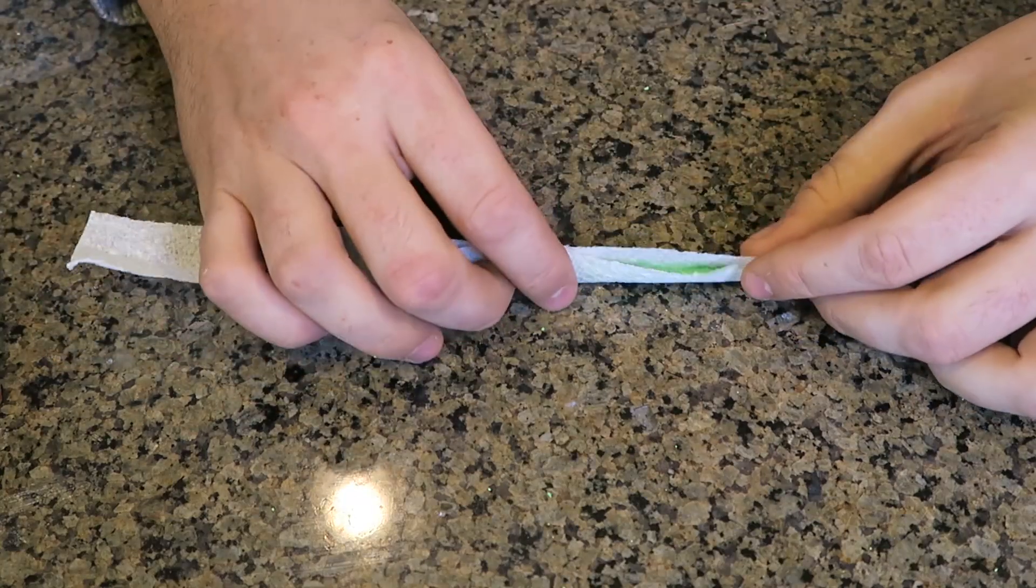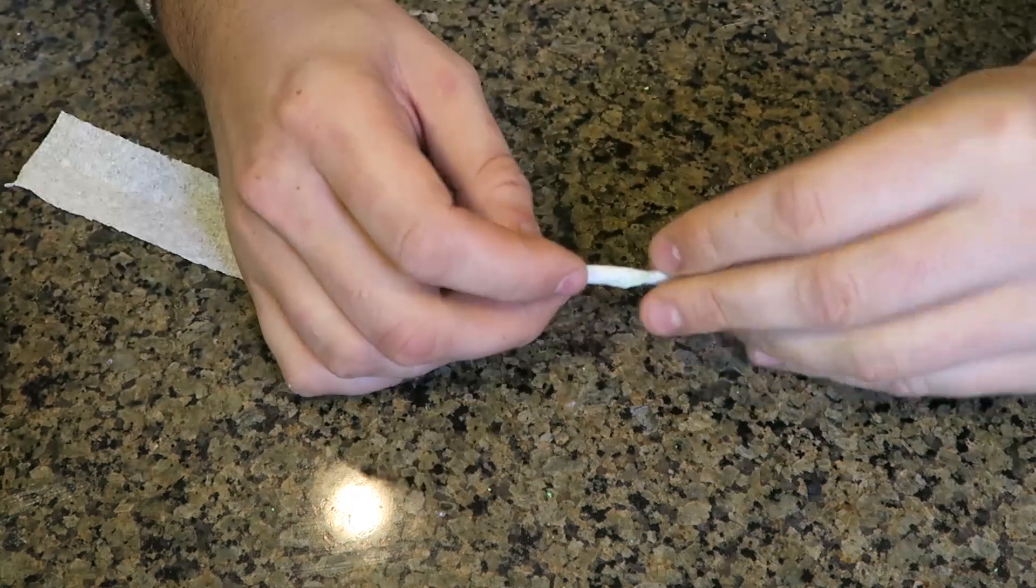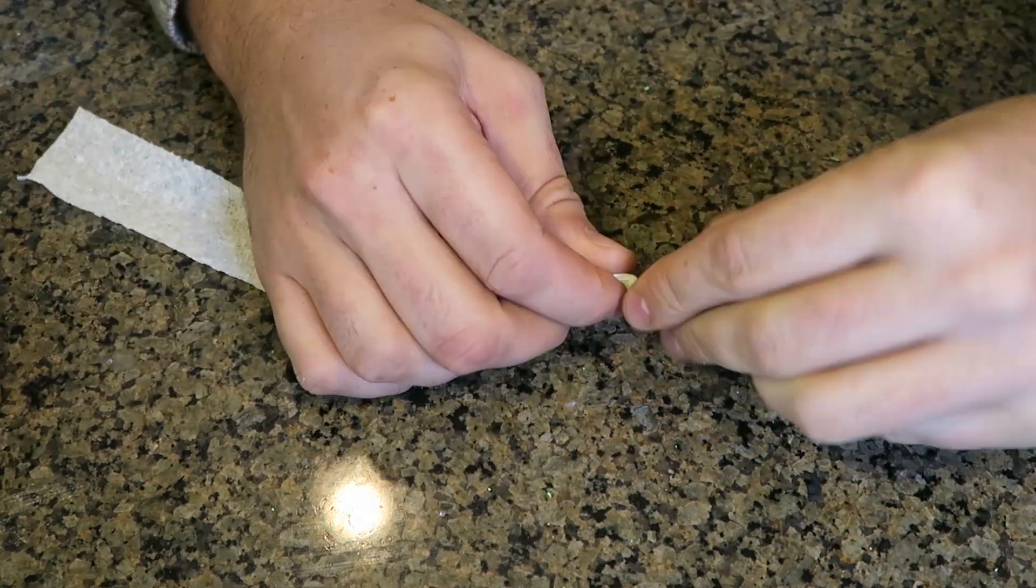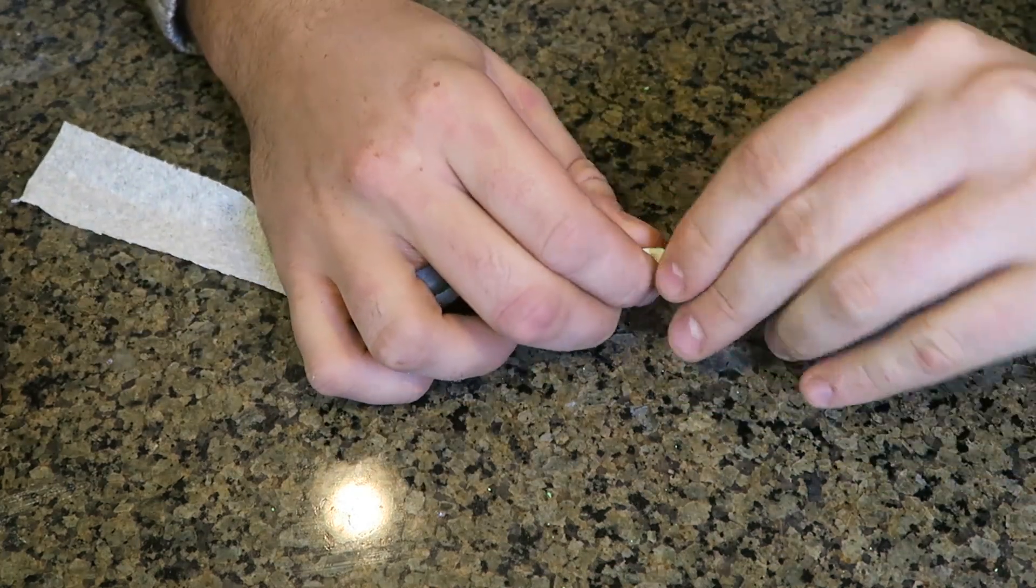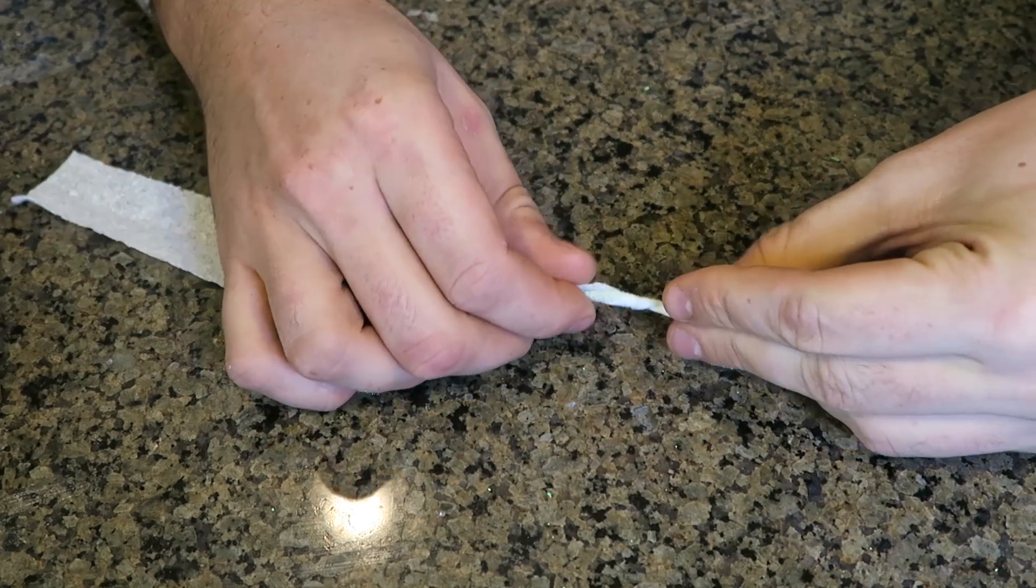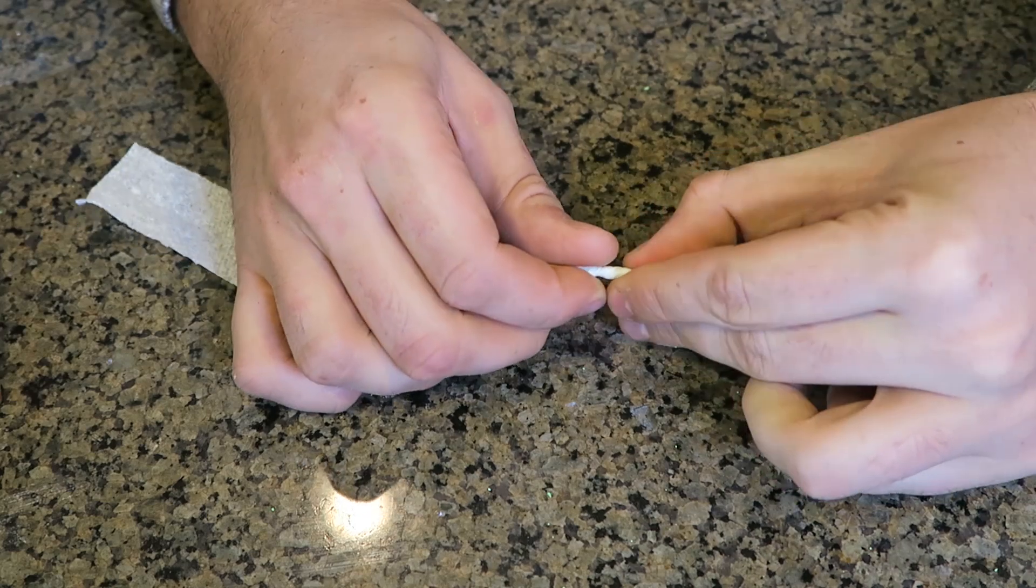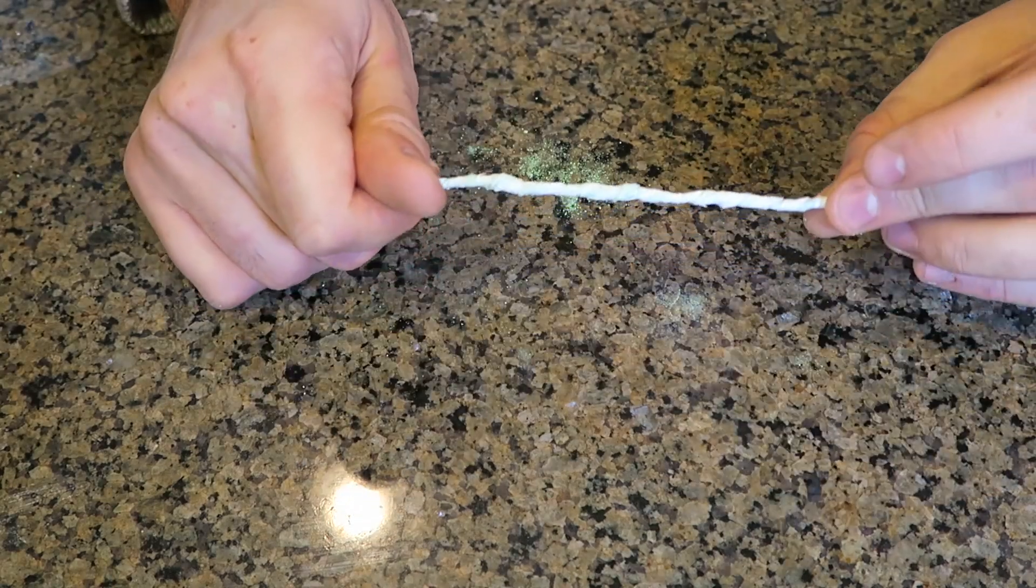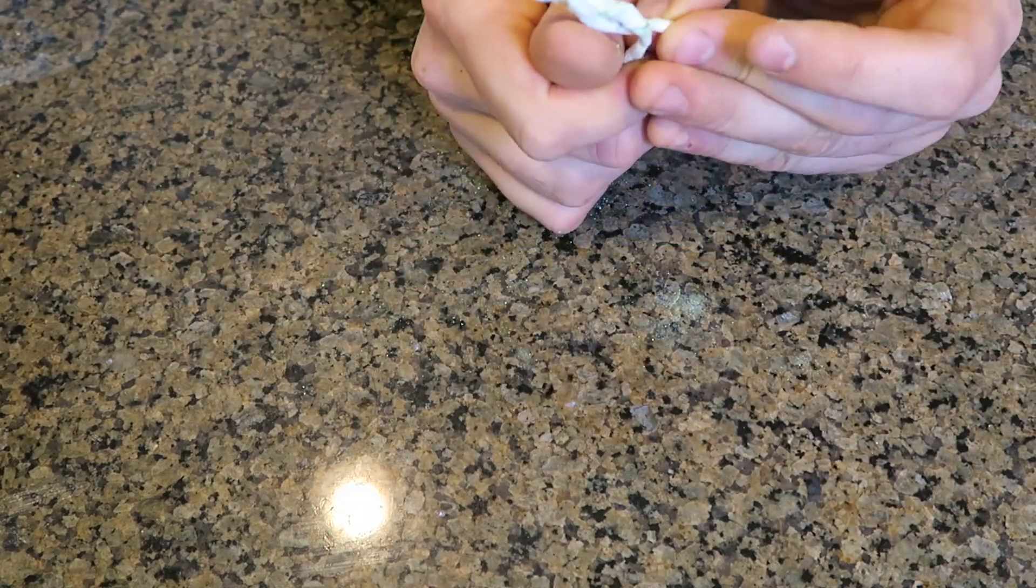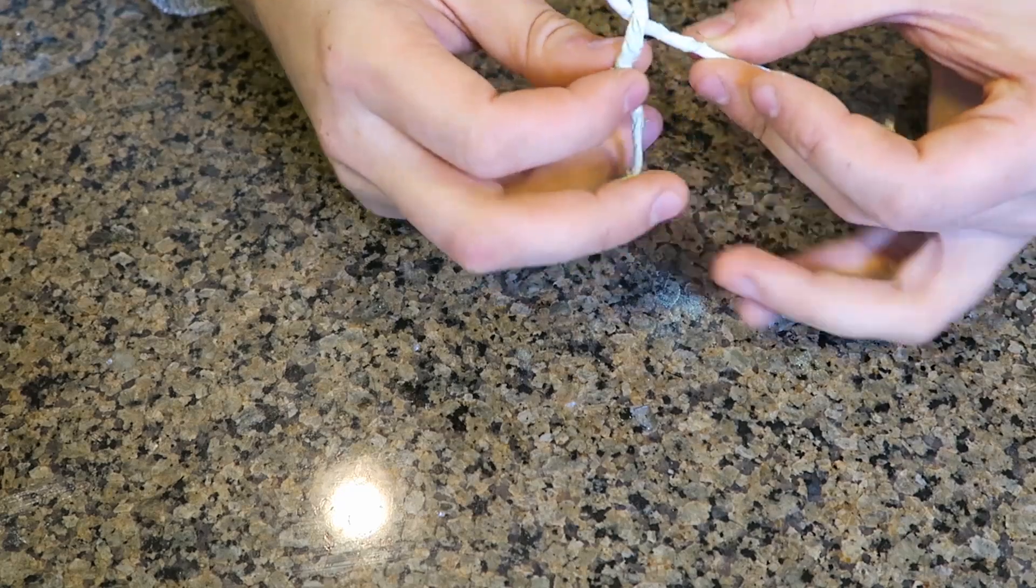Now I'm just gonna fold it, and next what I'm gonna do is just start twisting it. Start from the end, and just like this, as tight as possible. I'm gonna make sure it's twisted tight. Now let's test it out and see if it burns well or not.